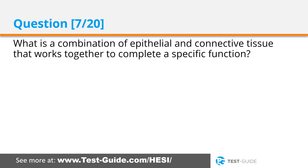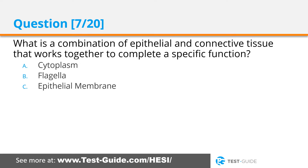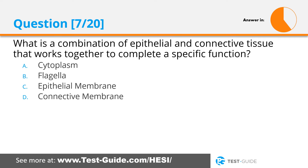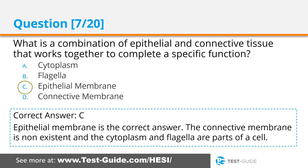Question seven: What is a combination of epithelial and connective tissue that works together to complete a specific function? Options: cytoplasm, flagella, epithelial membrane, connective membrane. Correct answer C. Epithelial membrane is the correct answer. The connective membrane is non-existent, and the cytoplasm and flagella are parts of a cell.